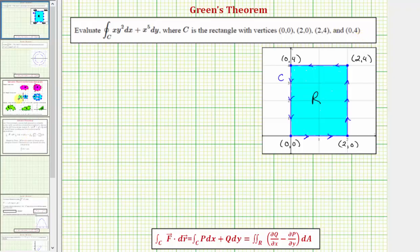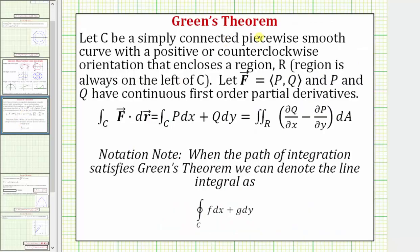Let's begin by reviewing Green's Theorem. Green's Theorem states that if we let C be a simply connected piecewise smooth curve with a positive or counterclockwise orientation that encloses a region R, and the region R is always going to be to the left of the curve, and we let the vector field F have components P comma Q, where P and Q have continuous first order partial derivatives, then the line integral along the curve C of F dot differential R, or the line integral in differential form, is equal to the double integral over the region R of the partial of Q with respect to x minus the partial of P with respect to y, differential A, where Q is the Y component of F and P is the X component of F.